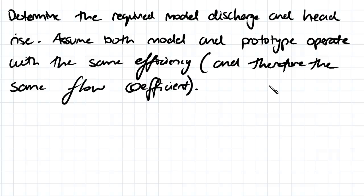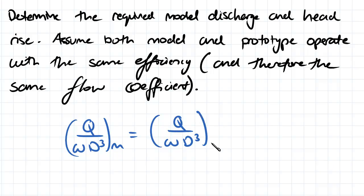First thing we need to do is work out what that model discharge needs to be. To do that, we're going to use the fact that they have the same flow coefficient. So that means that our flow rate divided by our angular velocity divided by our diameter cubed for the model has to be equal to our flow rate divided by our angular velocity divided by our diameter cubed for the prototype.